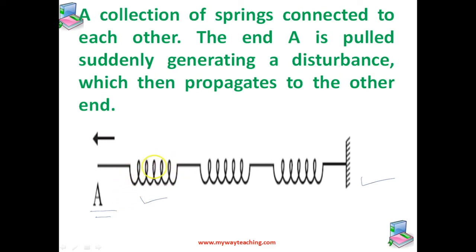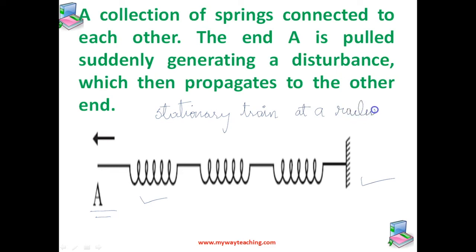A practical example is a stationary train at a railway station. The different bogeys of the train are coupled to each other through spring coupling. When an engine is attached at one end, it gives a push to the adjacent bogey and that push is transmitted from one end to the other, without the entire train being bodily displaced.